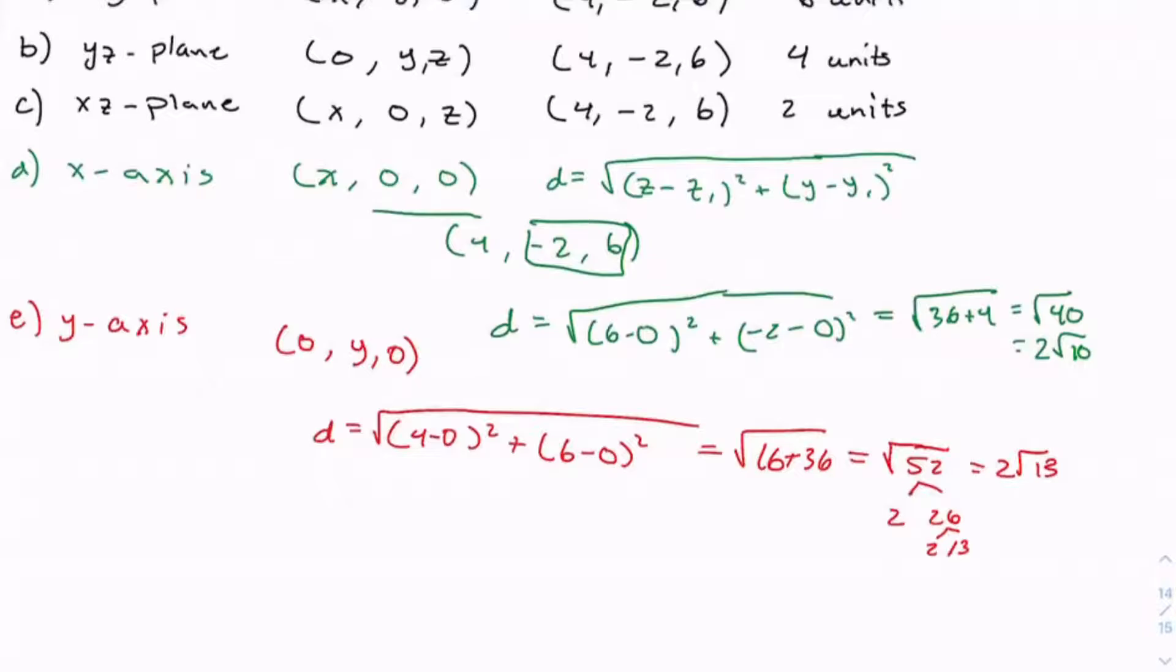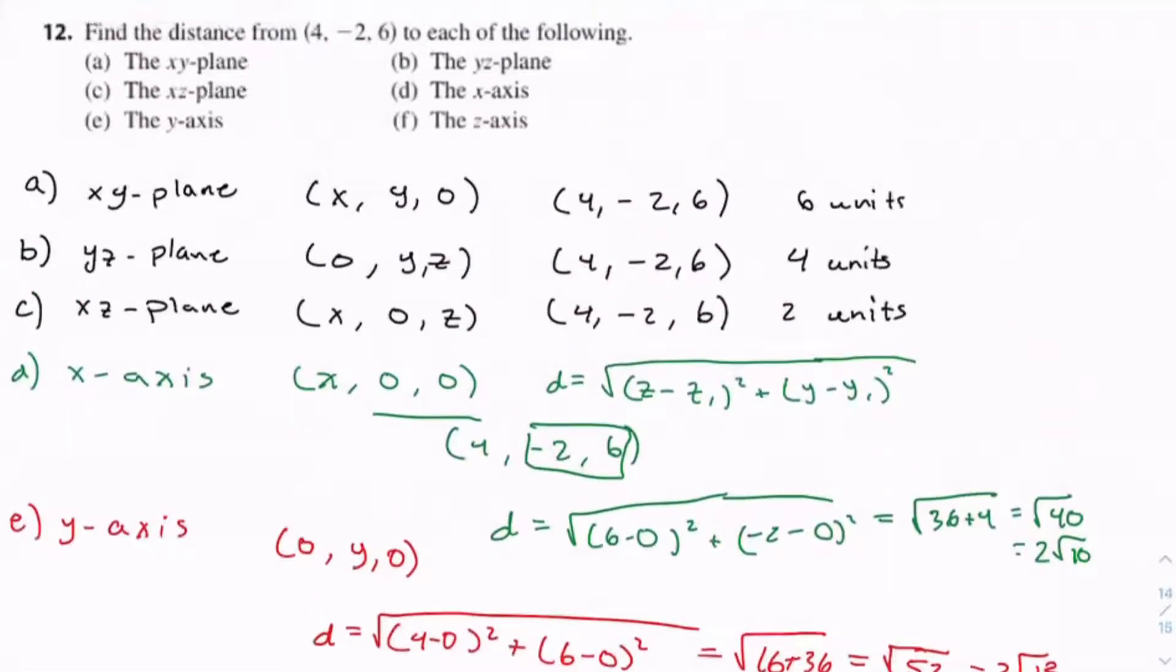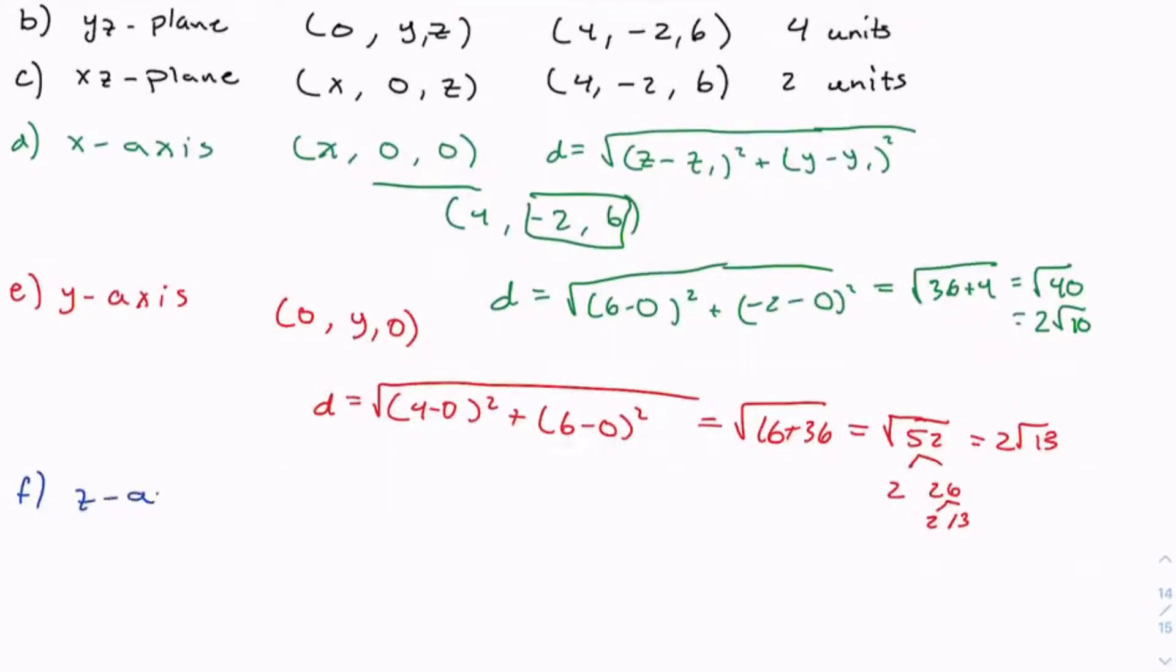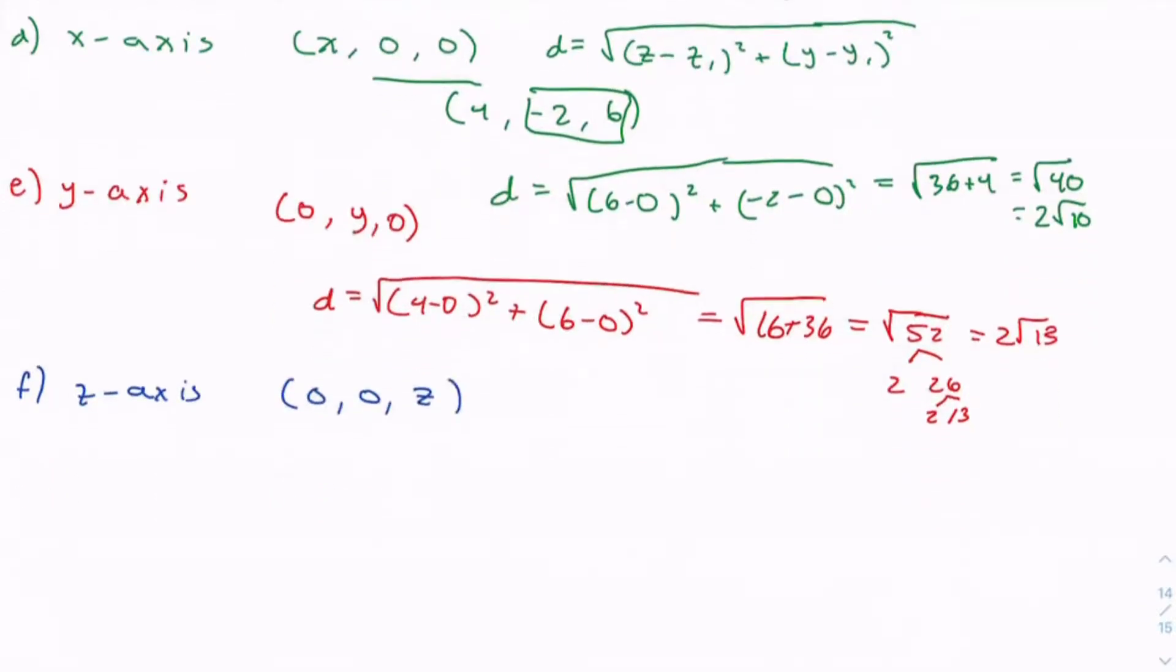For the final part, f, we have the z-axis. This can be represented by (0, 0, z), z being any number. Just to write it down again, our point is (4, -2, 6).